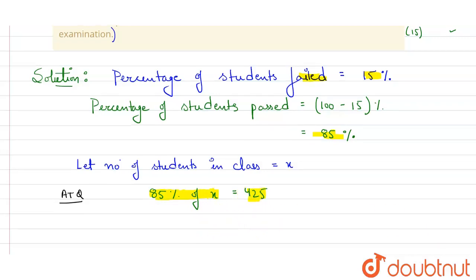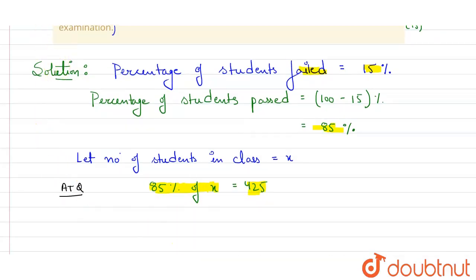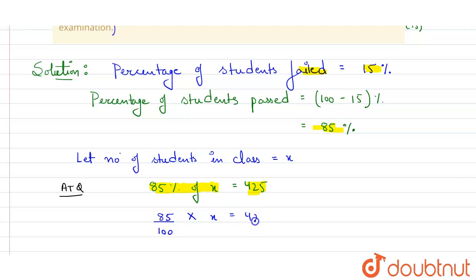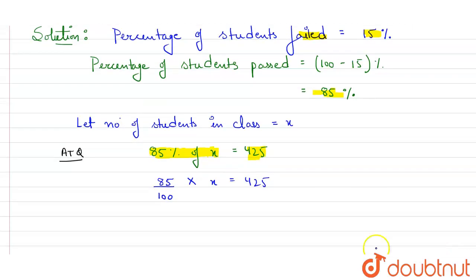On solving this equation, we remove the percentage and write 85 over 100 multiplied by x equals 425. To find the value of x, we keep x on one side, so x equals 425 multiplied by 100.